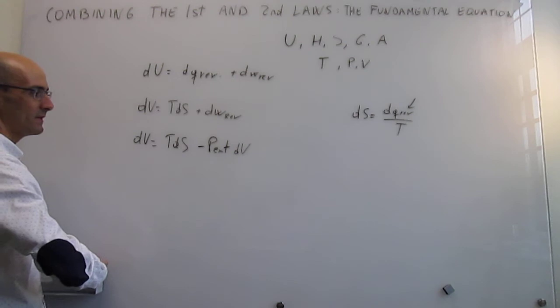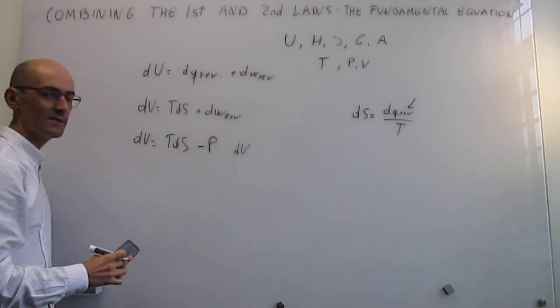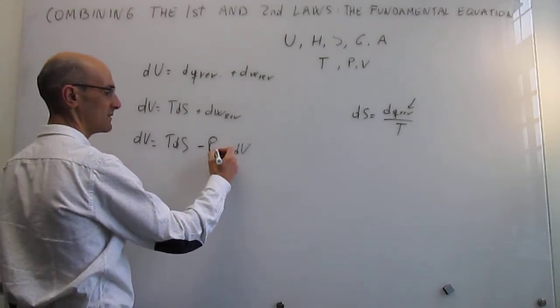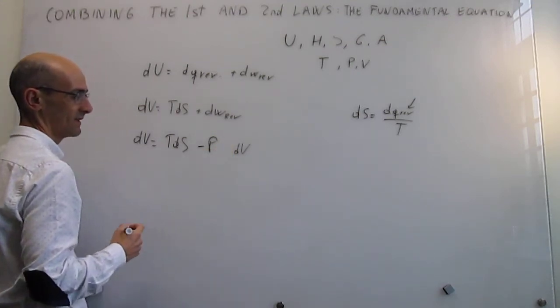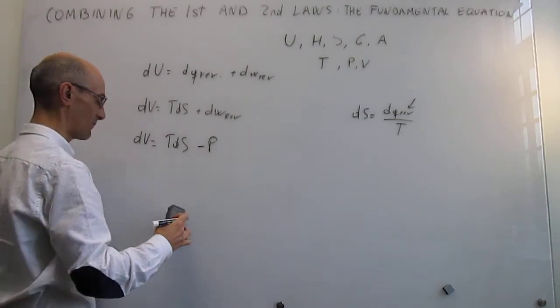One more thing though is that of course if this is a reversible process, then you have mechanical equilibrium between system and surroundings and that is exactly the same thing as the external pressure is identical to internal pressure and then you get that this is the equation that applies.